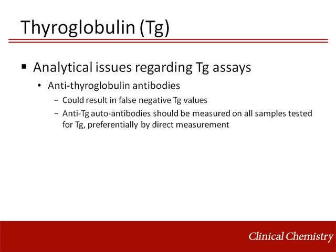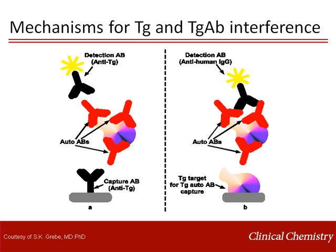Screening for thyroglobulin antibodies should be performed by immunoassay methods and not by a recovery test. It is now widely recognized that recovery tests are an unreliable means for detecting interfering antithyroglobulin antibodies. Thyroglobulin antibodies and thyroglobulin show mutual interference in their immunoassays. As shown in the panel on the left, in a typical immunometric thyroglobulin assay, the thyroglobulin present in the patient's serum is sandwiched between a capture and a detection antibody. In the presence of thyroglobulin antibody, binding of thyroglobulin can be prevented by blocking the access of the capture and/or the detection antibody to their respective epitopes on thyroglobulin. This will result in a falsely low level of thyroglobulin.